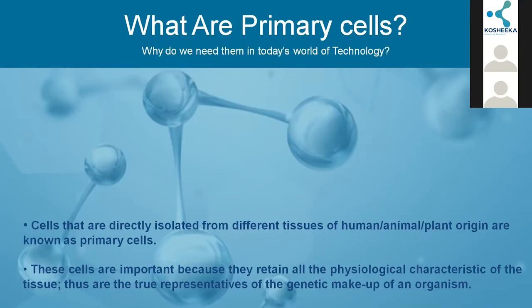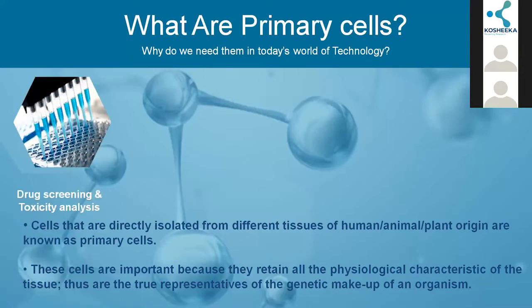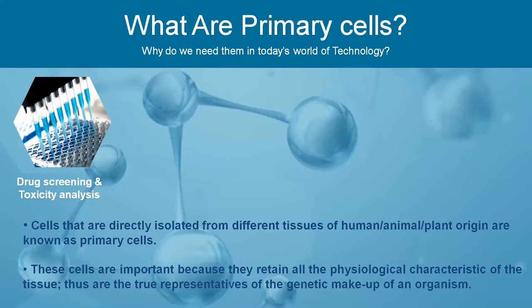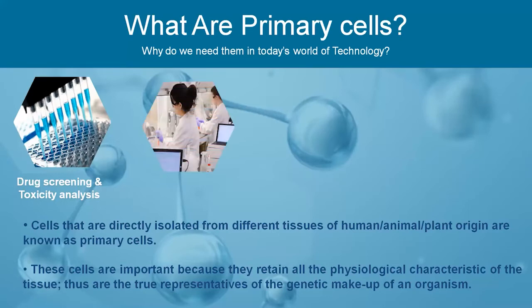Why are primary cells important in today's world? As we are all aware, animal experiments are banned by certain regulatory authorities. These primary cells can be used for drug screening and toxicity analysis while developing vaccines or any drug suitable for human use. We can analyze the efficacy of a drug directly on primary cells, making them a good candidate for drug screening and production of different biosimilar vaccines. They can also be a good substitute for cell biology and metabolic research, as well as in animal and pre-clinical studies.